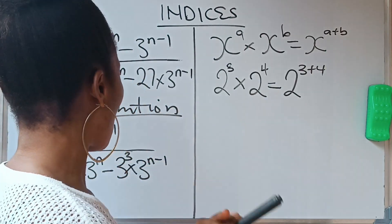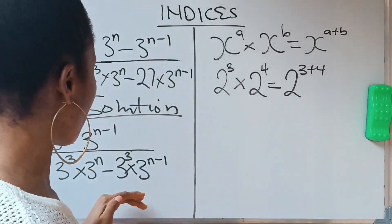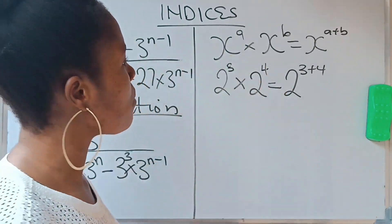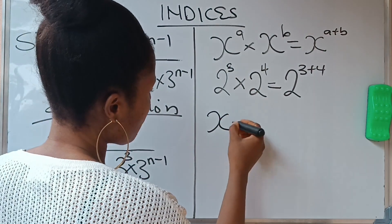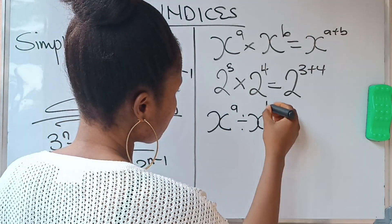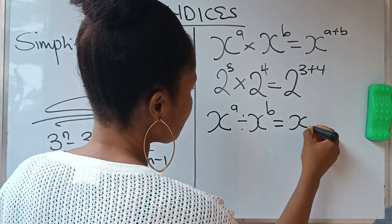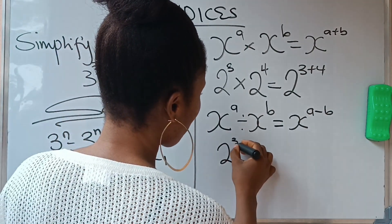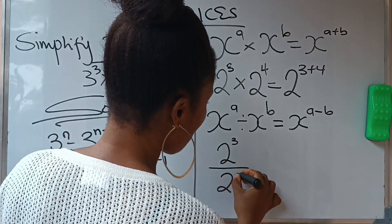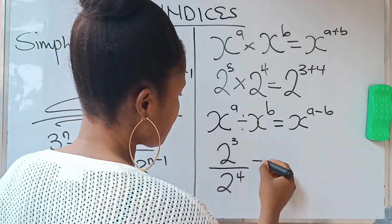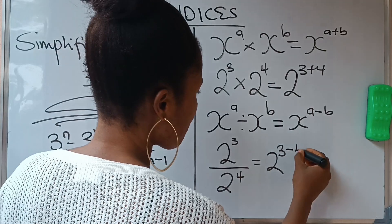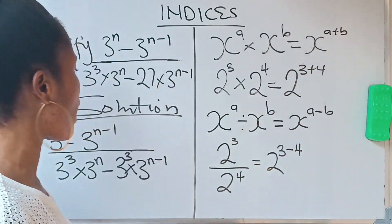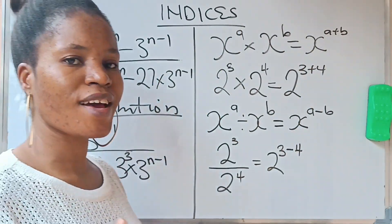The second law is the division law, which is the opposite. If you have x raised to the power of a divided by x raised to the power of b, you get x raised to the power of a minus b. For example, 2 raised to the power of 3 over 2 raised to the power of 4 is the same as 2 raised to the power of 3 minus 4. So those are the two laws we are going to use here.